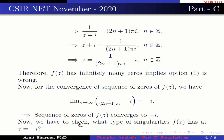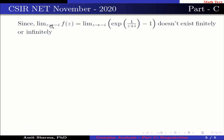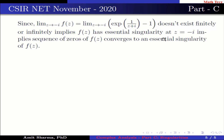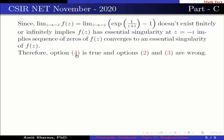Now we have to check what type of singularity f(z) has at z = minus iota. Since the limit as z approaches minus iota of f(z) = limit as z approaches minus iota of exponential of 1 upon (z + iota) minus 1 does not exist finitely or infinitely, this implies f(z) has an essential singularity at z = minus iota. Therefore the sequence of zeros of f(z) converges to an essential singularity of f(z), and options 2 and 3 are wrong.